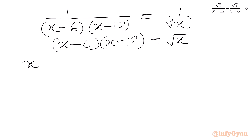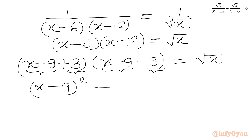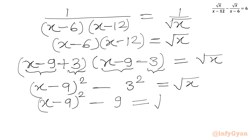Now x minus 6 can be written as (x minus 9) plus 3, since minus 9 plus 3 is minus 6. And x minus 12 we write as (x minus 9) minus 3. If we consider x minus 9 as a and 3 as b, then we have an (a plus b)(a minus b) form, so we can use the difference of two squares formula. We get (x minus 9) squared minus 9 equal to square root x.